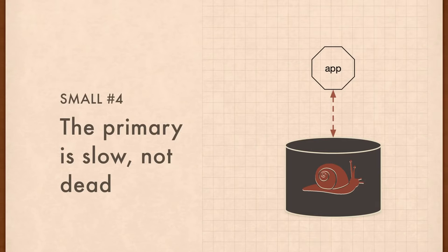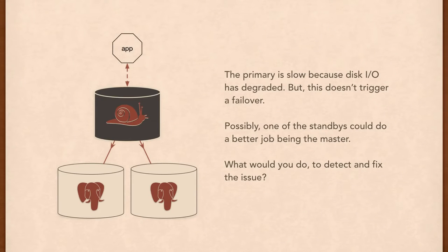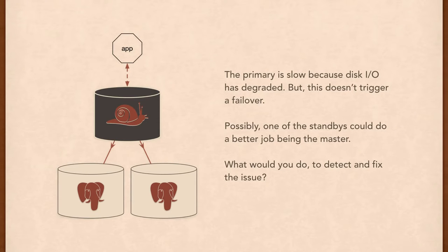Here's one last scenario: say the disk under your database degraded — you're down to 40% disk IO. This doesn't trigger a failover; it's just really slow, returning things in 45 milliseconds instead of 10. Possibly one of your standbys can take over as master. But how do you detect something like this? How do you ensure the standby is capable? Would you have to bring it up as master to check it out? Would you use the circuit breaker to detect this? We've thought about this a bit and leave it as something to think about and reason through — which is essentially what all this kind of work involves.